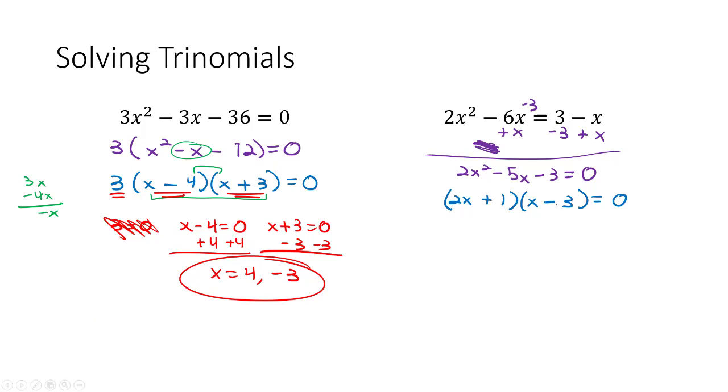Make it a +1 and a -3. Notice I very rarely get it on the first guess. I just keep guessing and keep moving forward. Don't give up. 2x times -3 is -6x and +1x. That's -5x. That matches. We know it's correct.